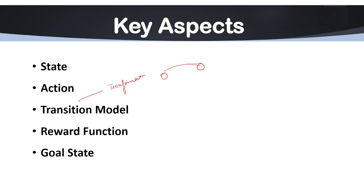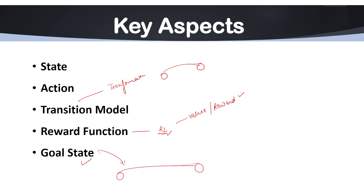Another key aspect is the reward function, which is very important and was also discussed in reinforcement learning. A reward function assigns a value — a reward — to each state or state-action pair, guiding the AI's behavior. Next is the goal state. For some problems, there is a goal state or a set of desirable states the agent aims to reach. In search algorithms, AI aims to find a path from the initial state to the goal state, which is why goal state is used under this representation.